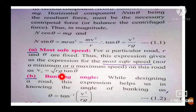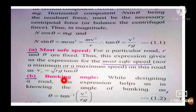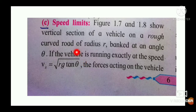At a given place, g (acceleration due to gravity) is constant. For a given banked road, R (radius of the curved road) is also constant, and the angle of banking θ is also constant. Therefore, for a given road, R, θ, and g are all constant, and thus the most safe speed Vs is constant.